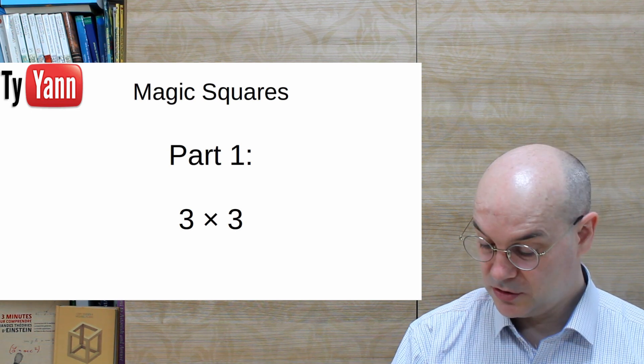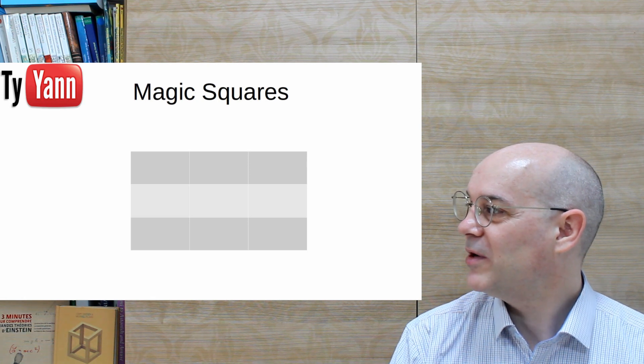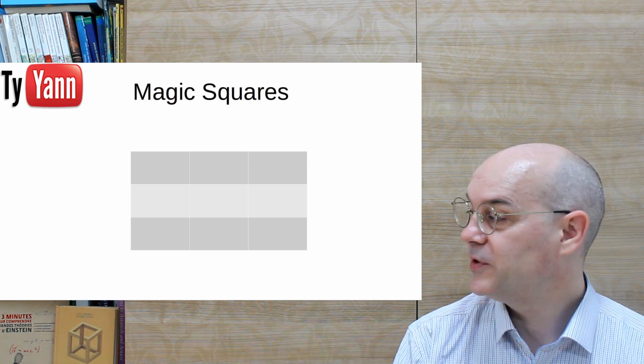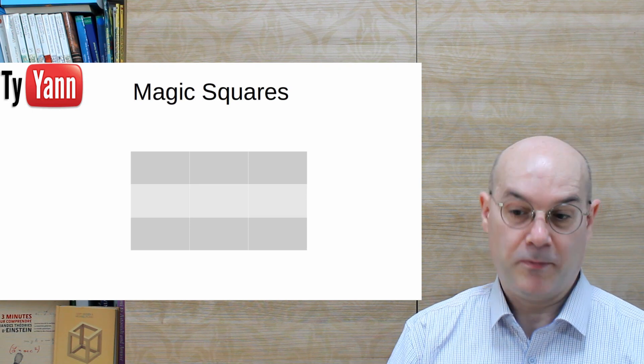So we're going to start with part 1 which is a 3x3 magic square. Here it is. But before, we're gonna say what it is to be a magic square.